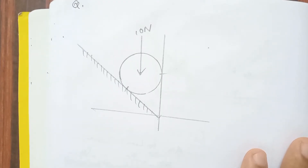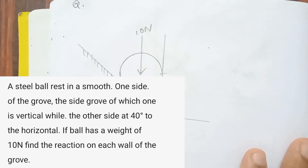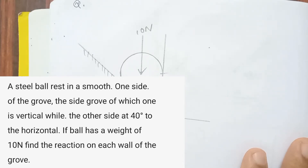First question is: a steel ball rests in a groove, the sides of which are smooth. One side of the groove is vertical while the other side is 40 degrees to the horizontal. If the ball has a weight of 10 newtons, find the reaction on each wall of the groove.